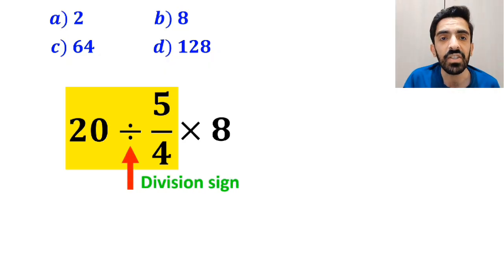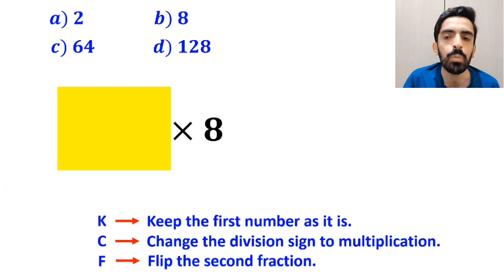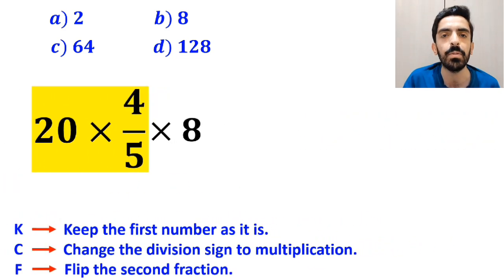Okay, whenever we see a division sign between two terms, the best approach is to use the KCF rule. So, we remove the highlighted part and replace it with 20 times 4 over 5.